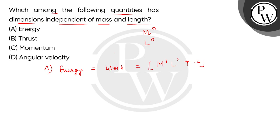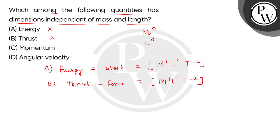Now if we check option B, which is thrust. Basically thrust means a type of force, so here we get the dimensions M1, L1, T minus 2. So this option is incorrect because it also contains mass and length.